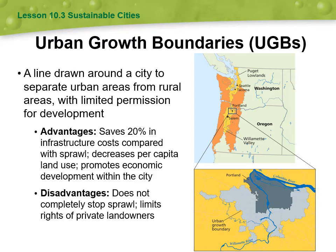The disadvantages are that urban growth boundaries don't completely stop sprawl, because developers can still get permission to build. If a city planner or mayor wants income, they'll give developers permission and sprawl will still occur. You can also move the urban growth boundary back every few years to allow more development. It's also controversial because it limits landowners' rights — what side of the boundary you're on dictates what you can do and what you can sell your land for.